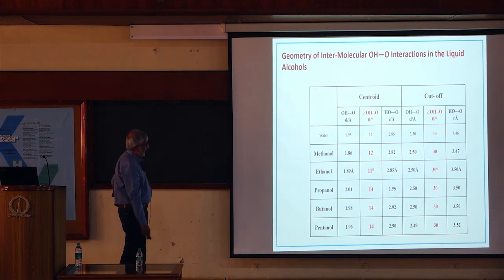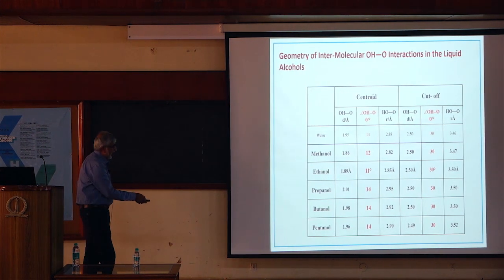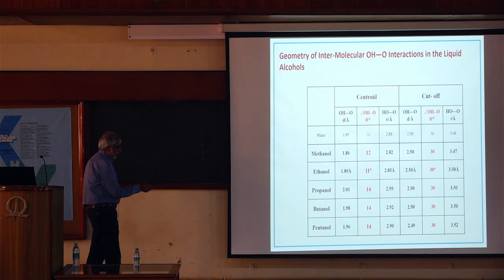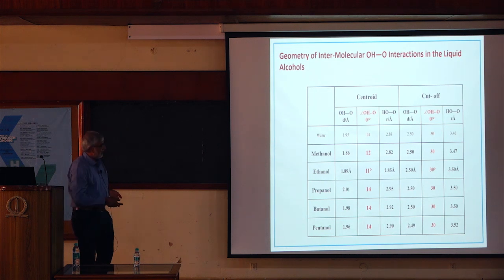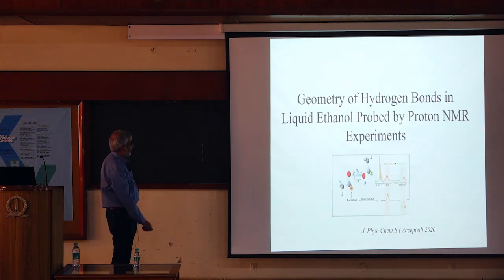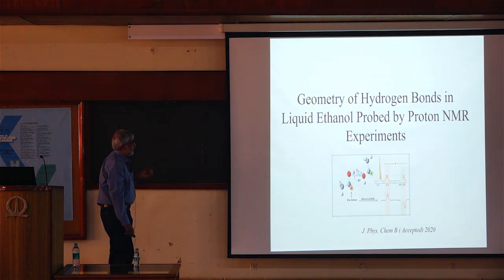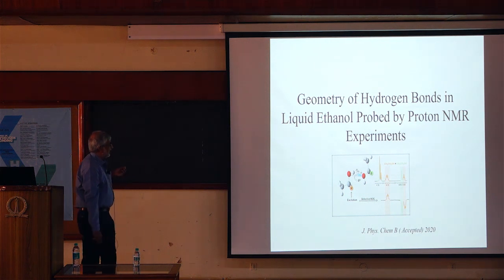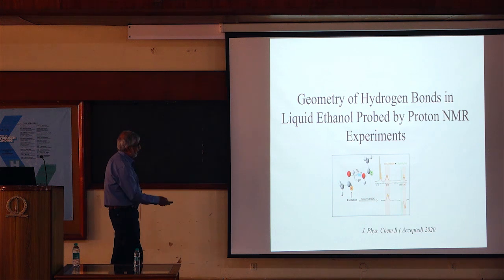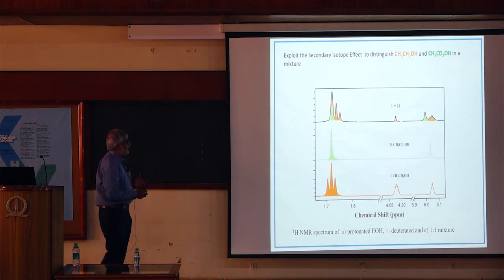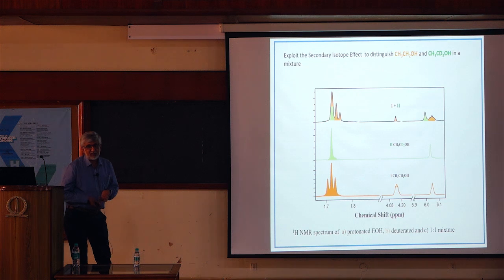We needed experimental verification of these results. We turn to NMR methods and try to look at the geometry of the hydrogen bonds in liquid ethanol by NMR measurements. What we have done is exploit the so-called secondary isotope effect.